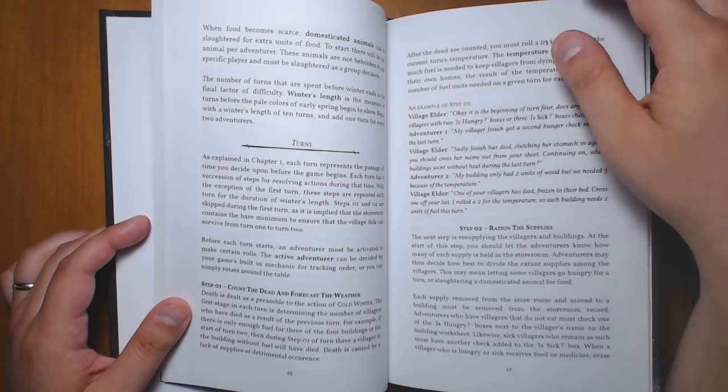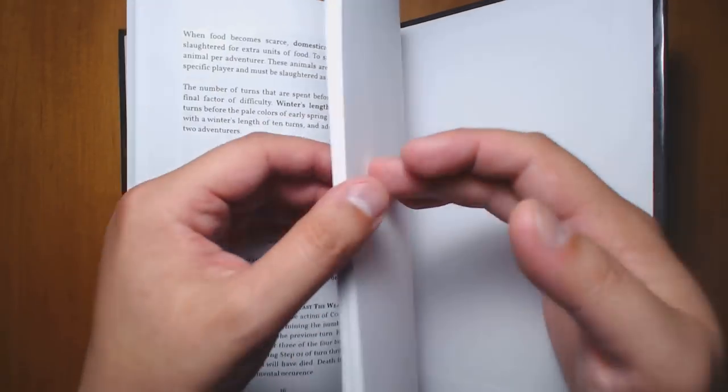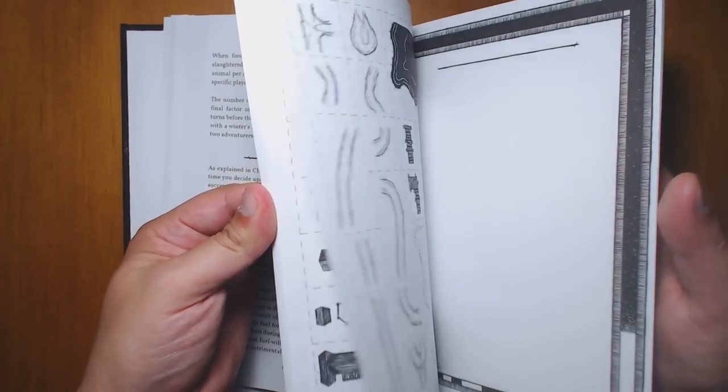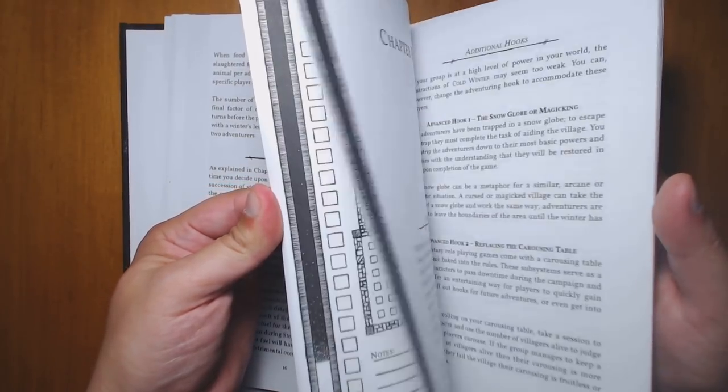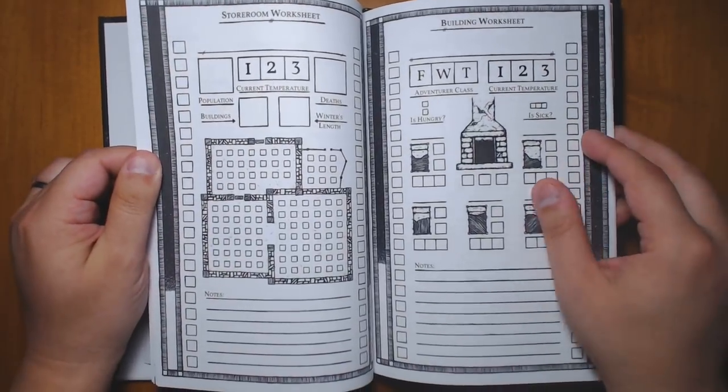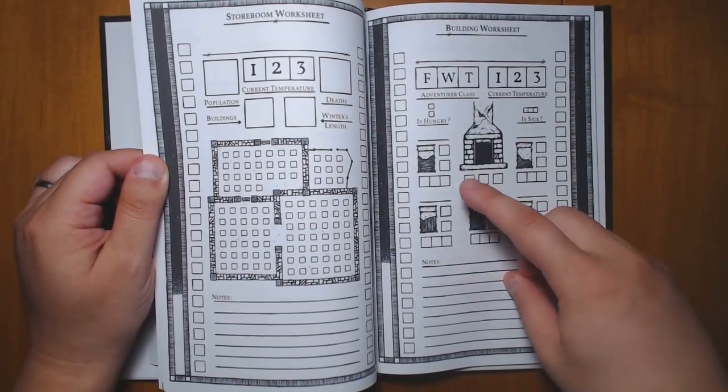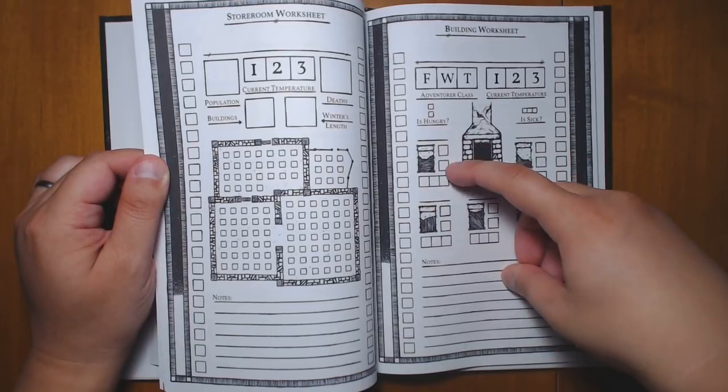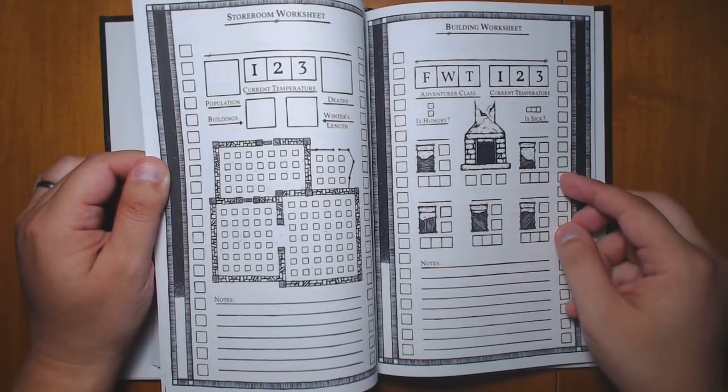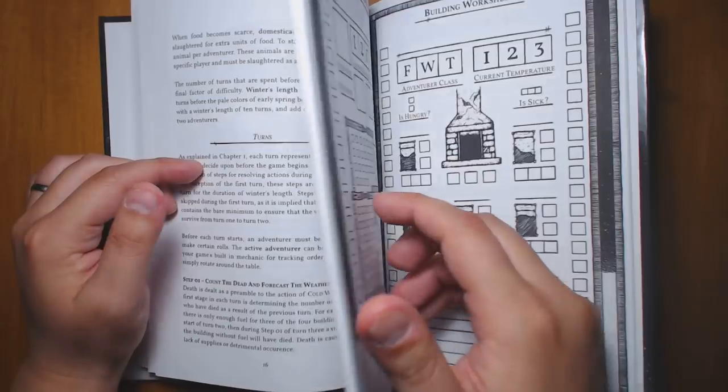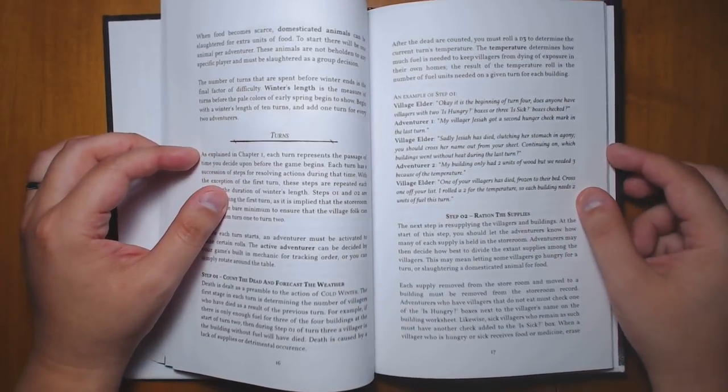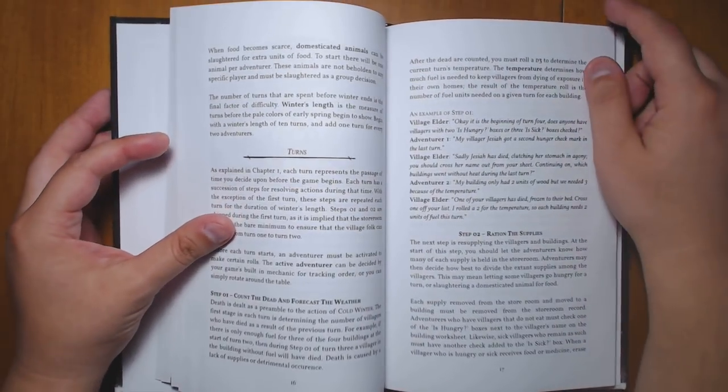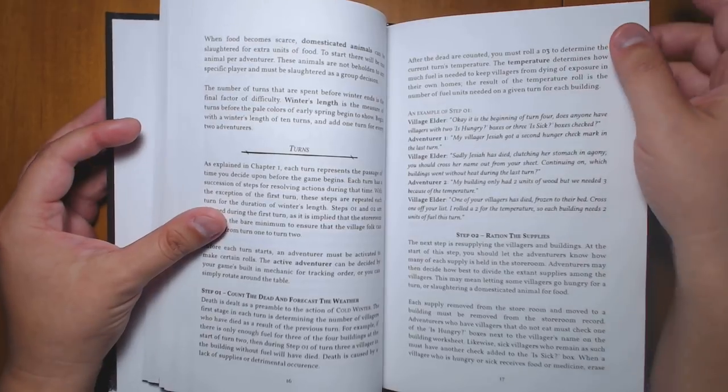I'll show you here at the back what we have. These little trackers here tracking the different people in each house, depending on how sick they are. There's three boxes here for how sick they are and two boxes for if they are hungry or not. And if they don't get their needs met, then they're going to die. So you need to manage all of your resources carefully. And there's a good deal of strategy put into this.